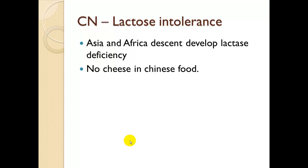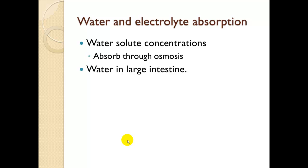Clinical note on lactose intolerance: people of Asian and African descent develop lactase deficiencies, as there are not a lot of high milk products in those countries. They are not tolerant of lactose, which is how we metabolize dairy products — an example is that there's no cheese in Chinese food. Water and electrolyte absorption: water-soluble concentrations are absorbed through osmosis, moving from higher to lower concentration, and water is mostly absorbed in the large intestine as the body's last opportunity.